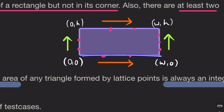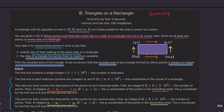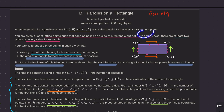If the opposite corners are (0,0) and (W,H), then the other two corners will be (W,0) and (0,H). We are given this rectangle and a list of lattice points such that each point lies on a side of the rectangle, but not on its corners.